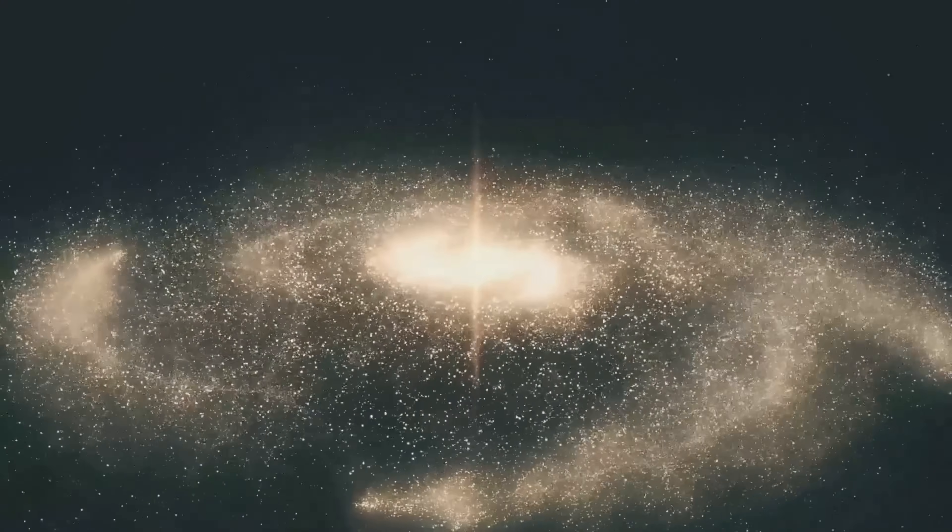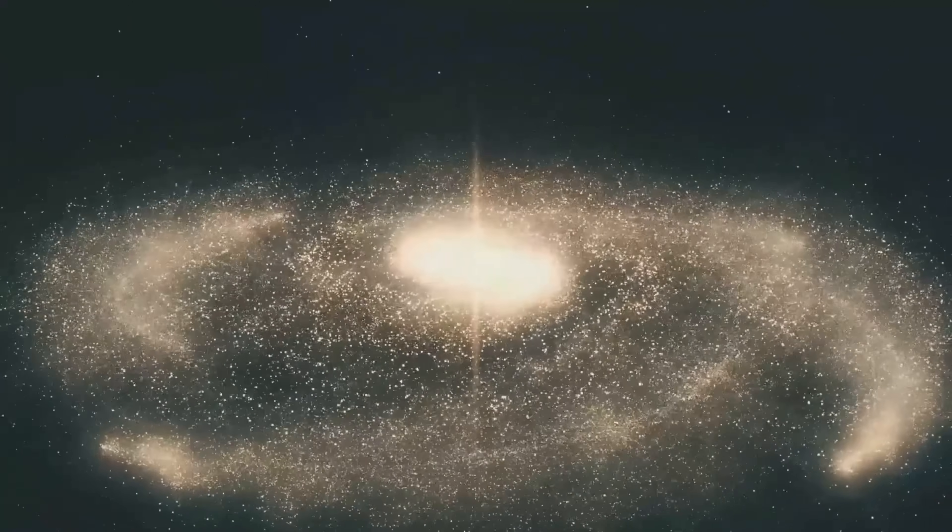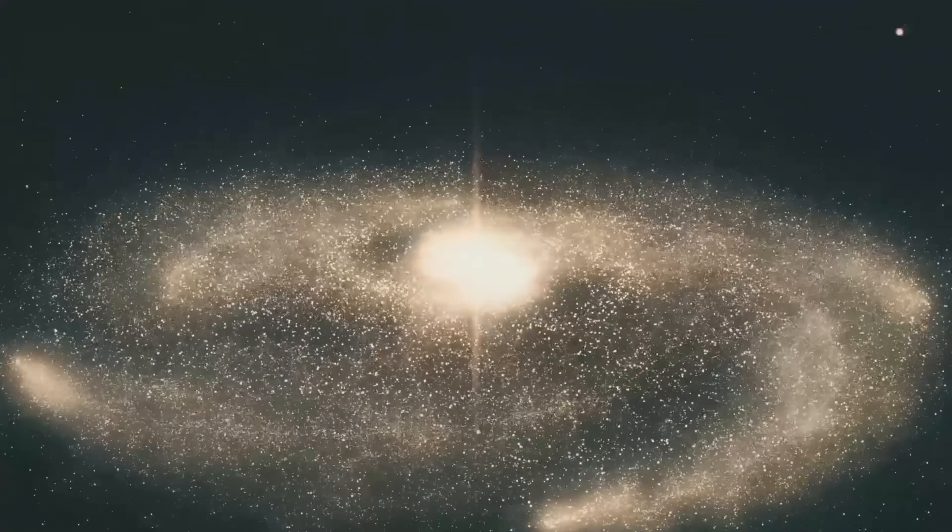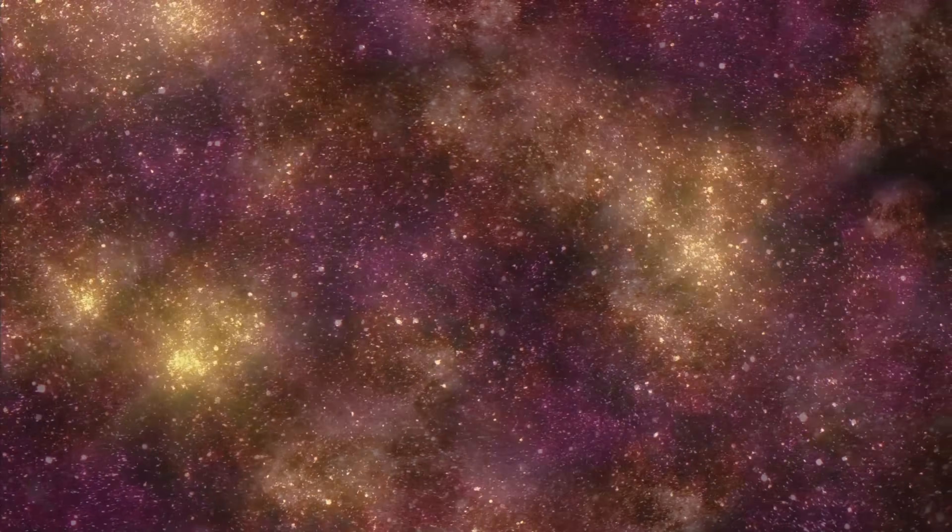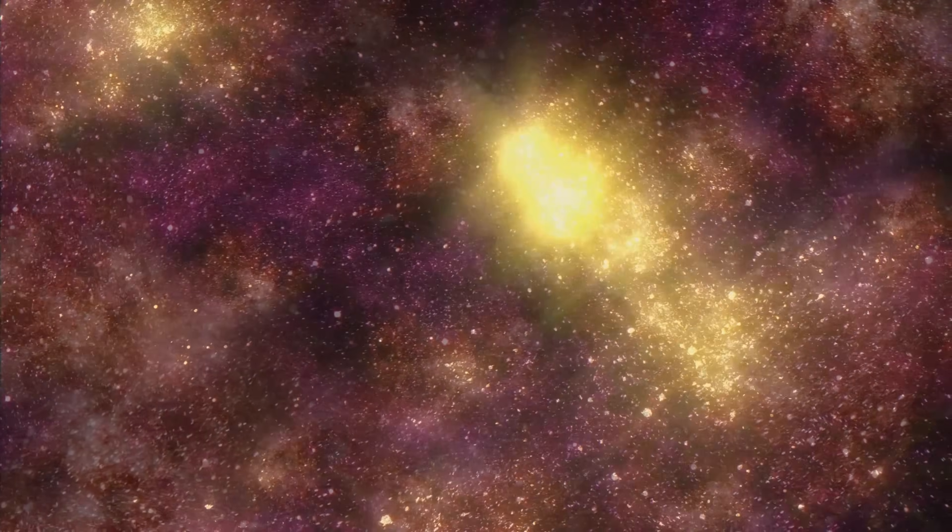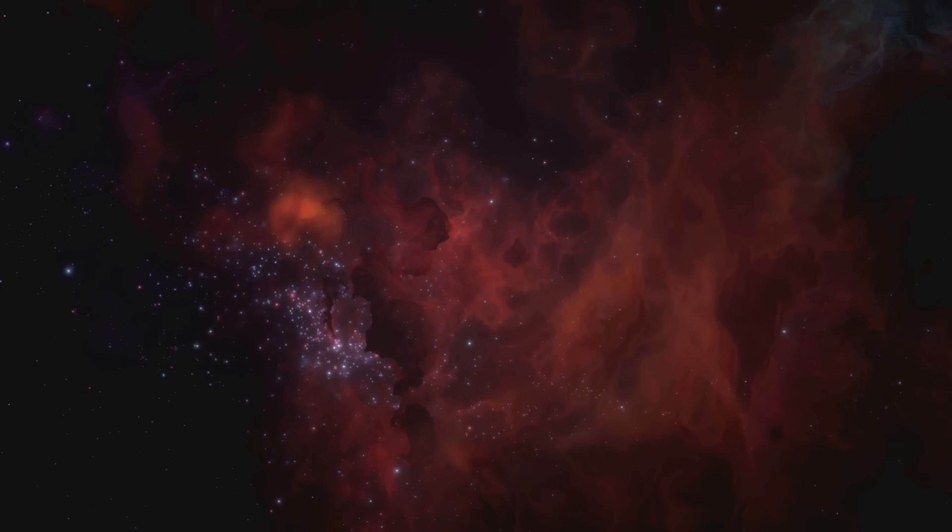Made up of many things, galaxies are a blend of stars, gas, dust, and dark matter. Each of these components contributes to the galaxy's overall structure and behavior. They contain stars, gas, dust, and something mysterious called dark matter. Stars are the most visible components, shining brightly and providing light and heat.